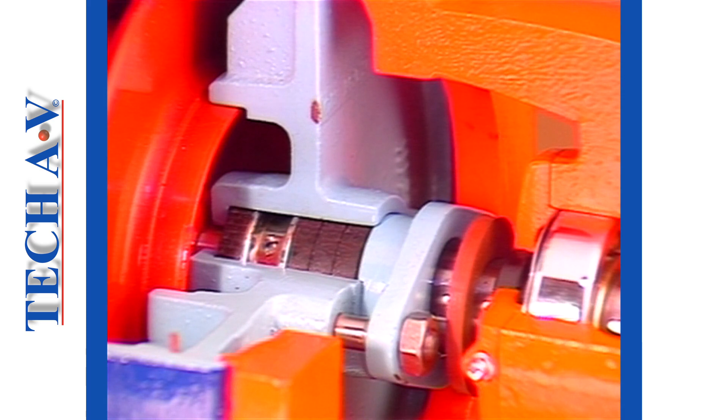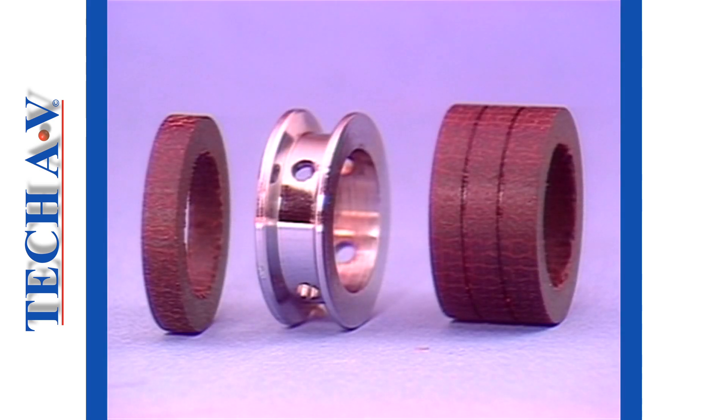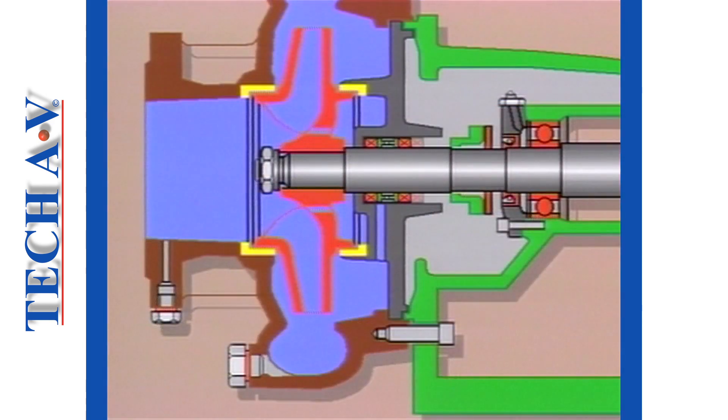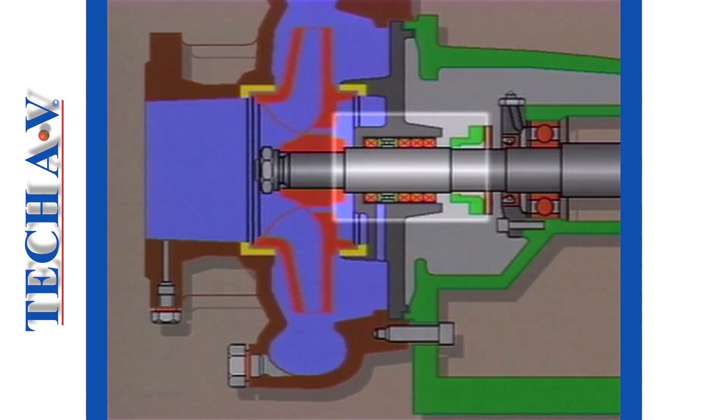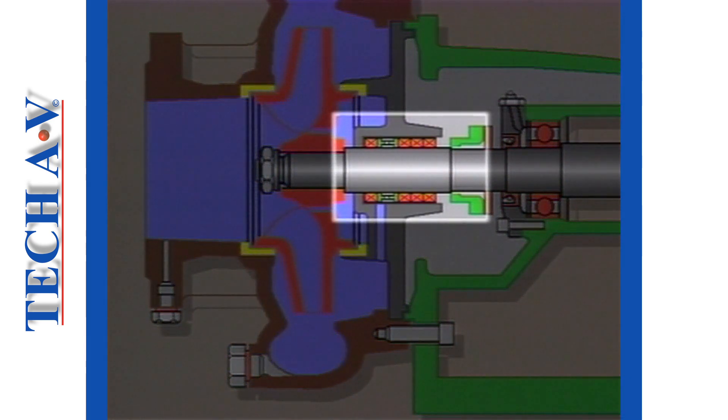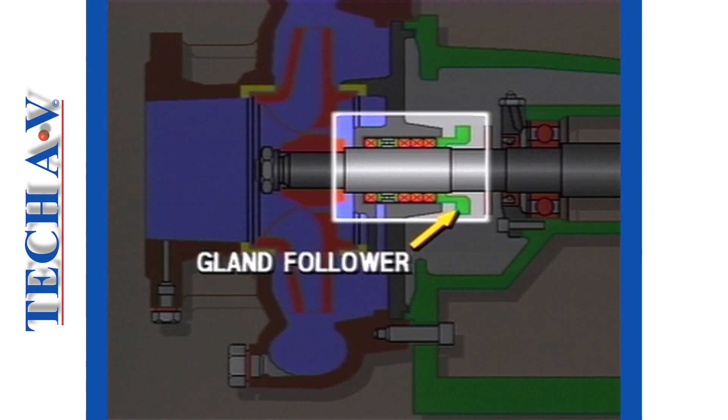The gland cover contains the sealing components, which are necessary to prevent air from entering the system via the impeller shaft. In the pump type being discussed, the seal comprises soft packing rings and a lantern ring, all of which are contained in the stuffing box. The packings are held in compression with a gland follower.